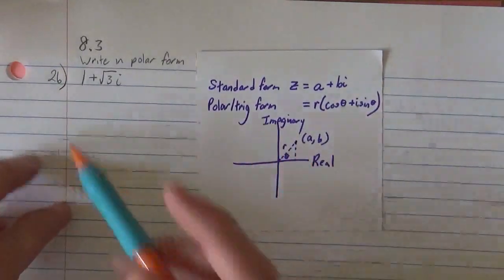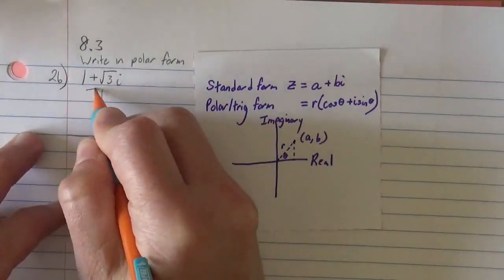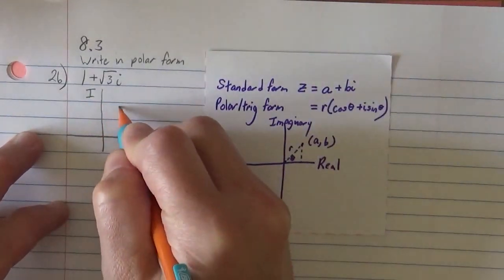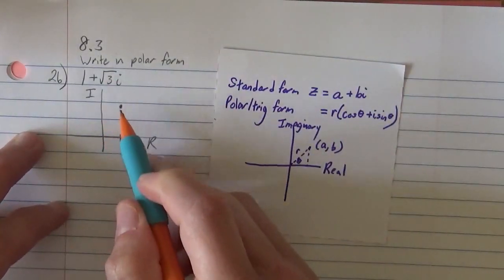The first thing you want to do is graph this guy. If we're on the real and imaginary axis, we're 1 on the real and root 3 up on the imaginary. A quick little sketch to make sure you're in the right quadrant is all you need.